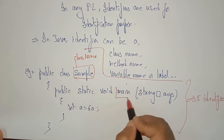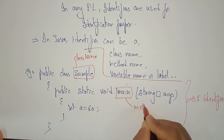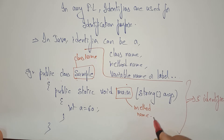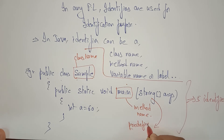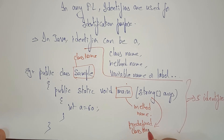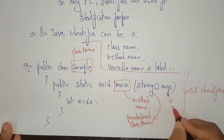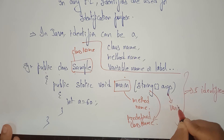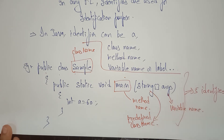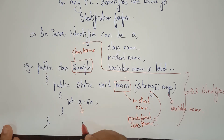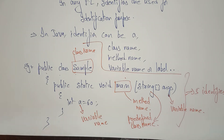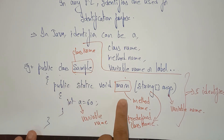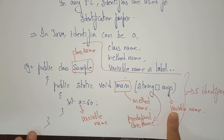The first identifier is the class name. Next, method name — 'main' is a method name. Then 'String' is a predefined class name that we are accessing here, so it is also an identifier. 'args' is a variable name — that's an identifier. 'A' is also a variable name and an identifier. Note that 'int' is a keyword, so it is not an identifier. In total, there are five identifiers in this example.